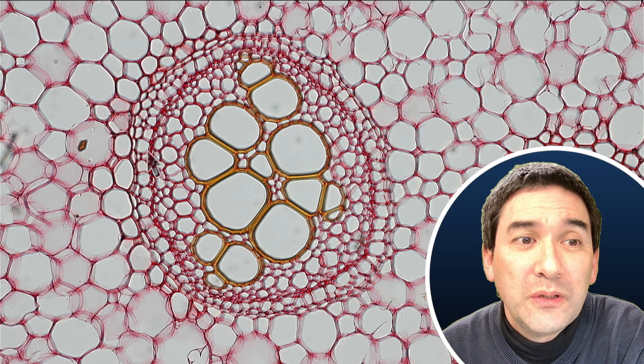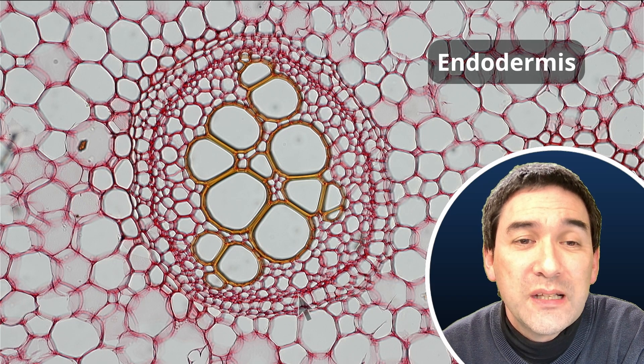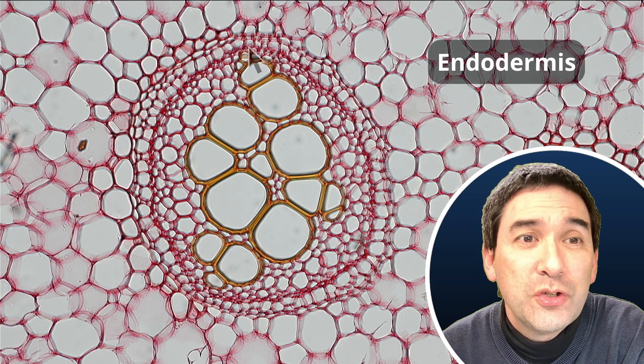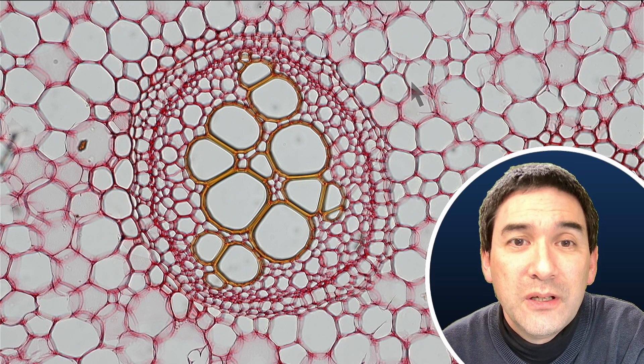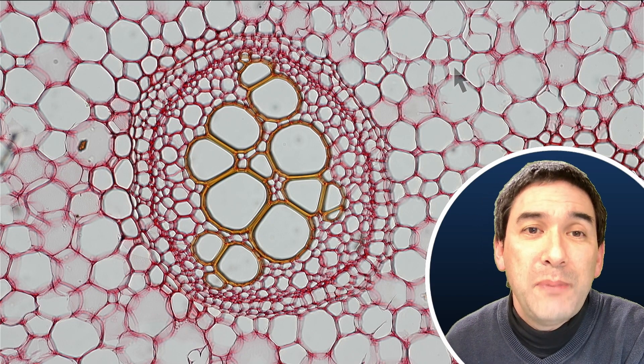You have on the outside here the so-called endodermis, which is a layer of cells that essentially also surrounds these vascular cells here. And then here you have other cells of the stem. And this is a basic structure that is kind of repeating all over the place here. You can see it over here as well. And I think this is a very pretty specimen here.